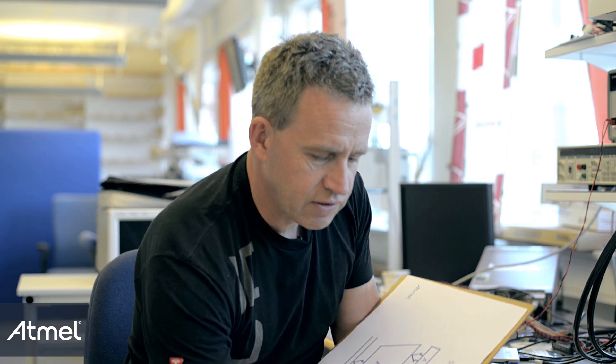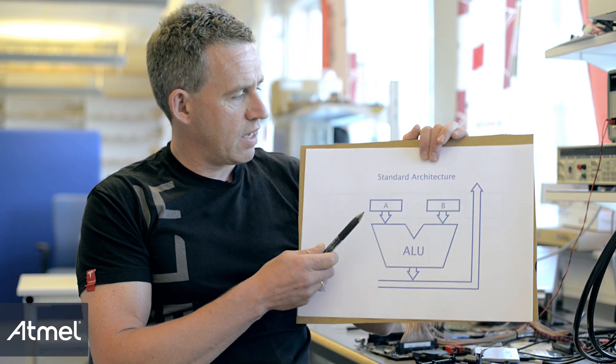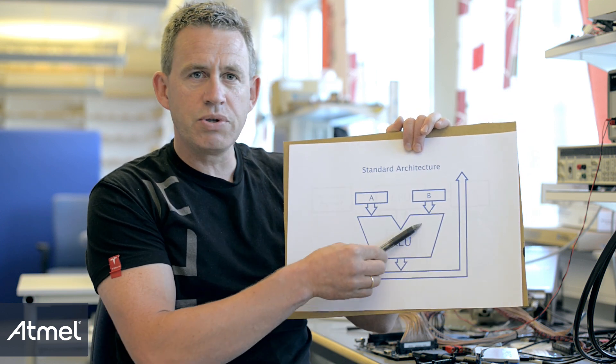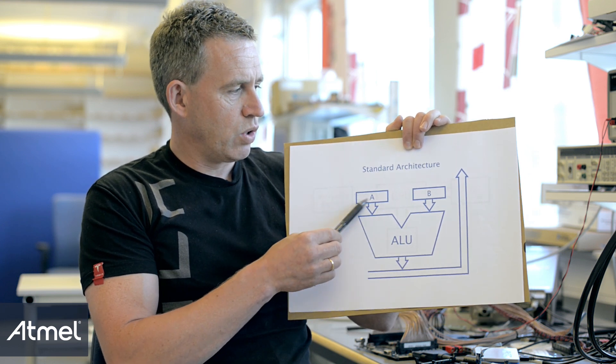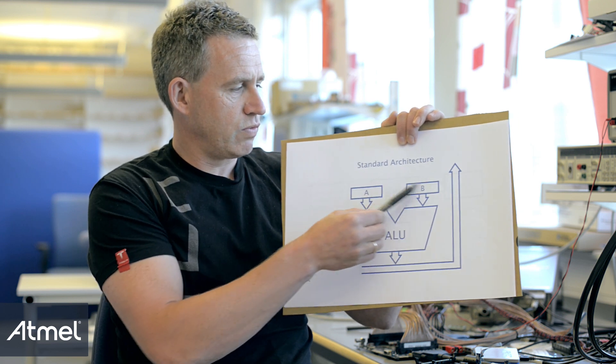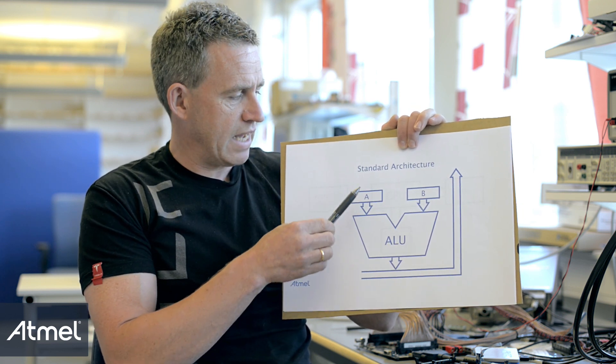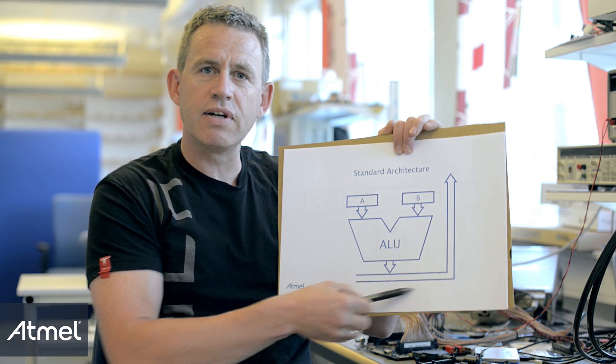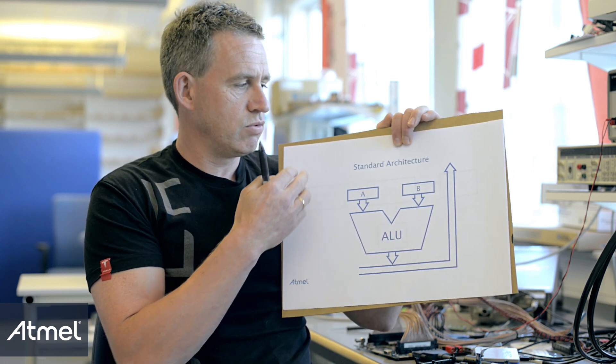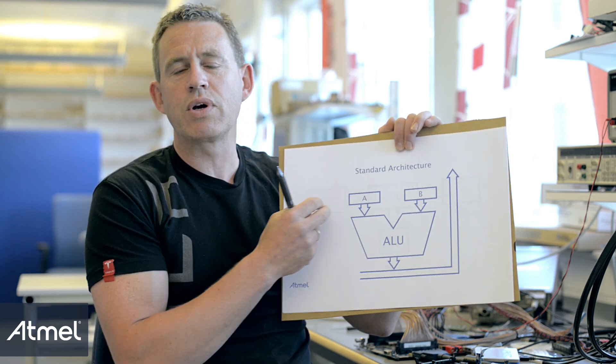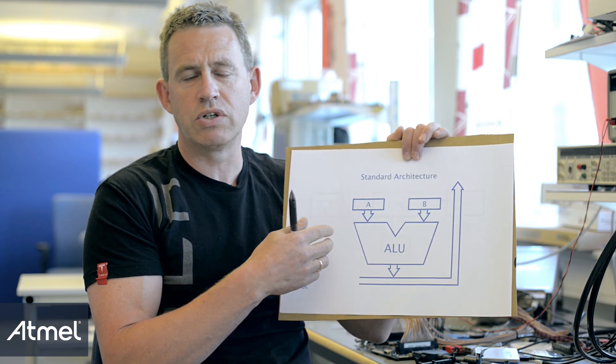Another thing about these architectures is that most are accumulator-based. The arithmetic logic unit has access to one or two accumulators — if you want to add numbers, you add A to B through the accumulator and send it back to the bus. So everything has to move through these two accumulators, making it a bottleneck. That's typical of CISC architectures, and each instruction always takes multiple cycles.